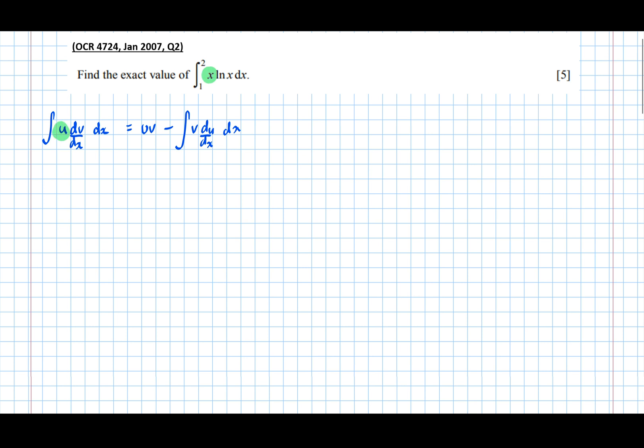So this tells us that the first thing in the product is u and the second thing in the product is log x. So let's write that down.